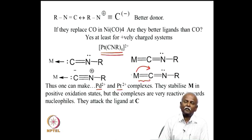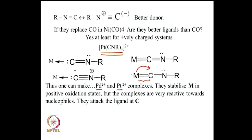In summary, alternative ligands to carbon monoxide can be designed using the periodic table and chemical reasoning. The ligands covered are: CS (carbon monosulphide), CSe (carbon monoselenide), CTe (carbon monotelluride), CN⁻ (cyanide), and CNR (alkyl isocyanide). All of these are good alternatives to carbon monoxide in organometallic chemistry, each with their own advantages and limitations in terms of stability, synthesis, and electronic properties.